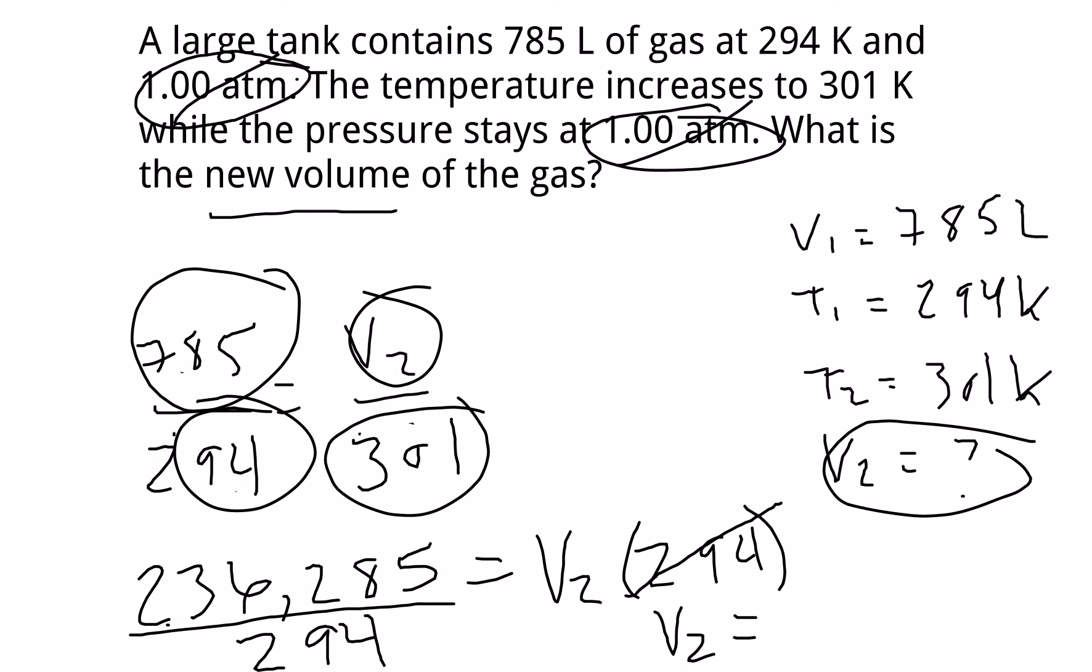And hopefully what you get is 804 liters. That's what V2 should come out to. So as you can see, this is basically simple algebra at the heart of these simple gas laws. So hopefully you found this helpful.